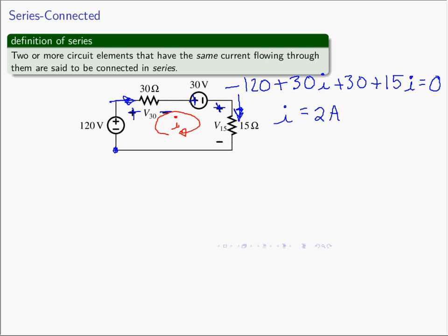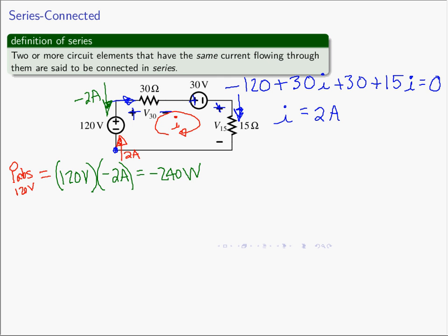So we have two amperes flowing through each of these circuit elements. The question was: what is the power absorbed by everything? For the 120 volt voltage source, the current I is flowing clockwise, so it's flowing up through the source — which means it's actually entering the negative terminal, making it negative two amperes into the positive terminal. So the power absorbed is 120 volts times negative two amperes, which gives negative 240 watts absorbed by the 120 volt source.